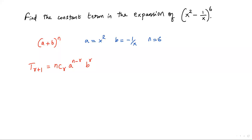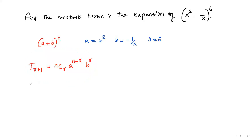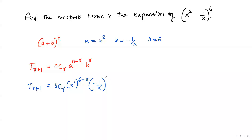Let's plug in these values for a, b, and n into the formula. So we get T(r+1) equals 6Cr times x squared to the power (6 minus r), times negative 1 over x to the power r.